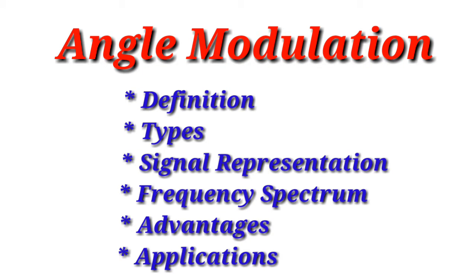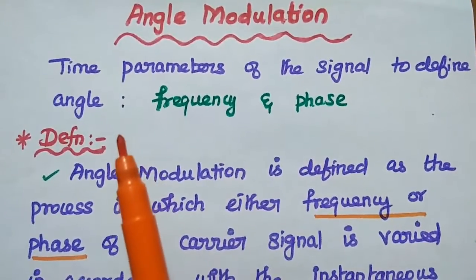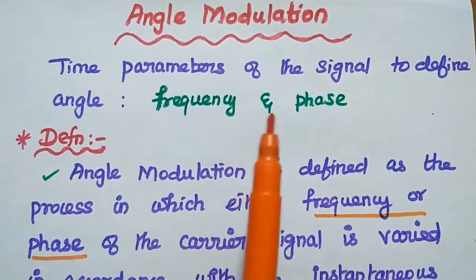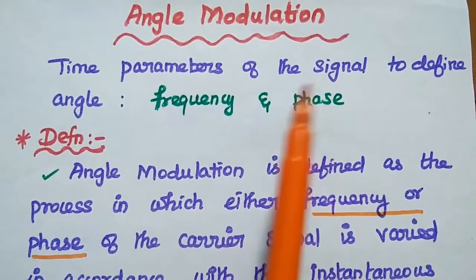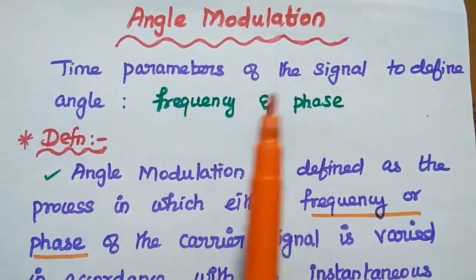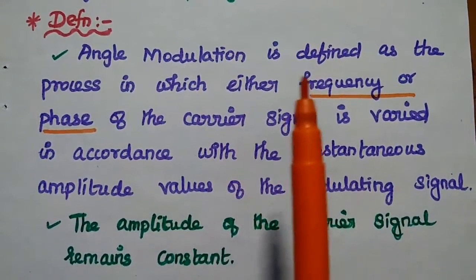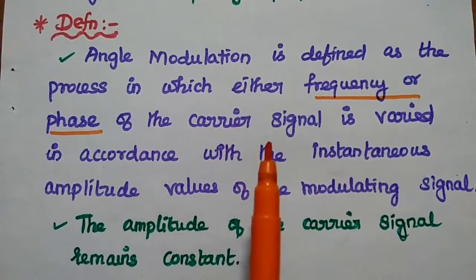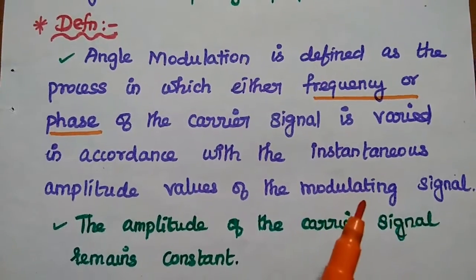Dear students, now we are going to discuss the basics of angle modulation in detail. The angle of the signal can be defined by using the time parameters of the signal. Here the time parameters are frequency and phase. In angle modulation, either frequency or phase of the carrier signal is varied in accordance with the message signal. Angle modulation is the process in which either frequency or phase of the carrier signal is varied in accordance with the instantaneous amplitude values of the modulating signal.